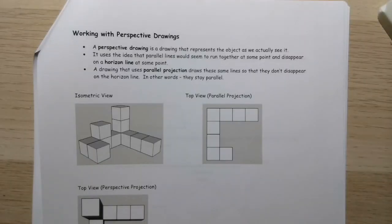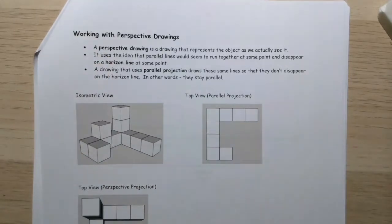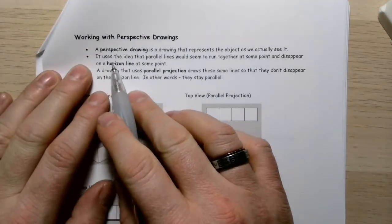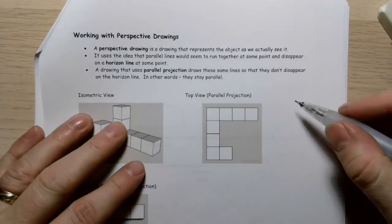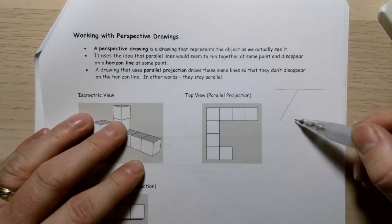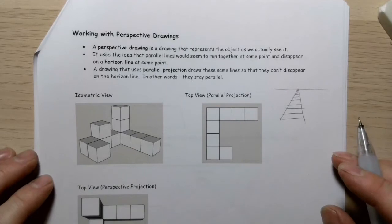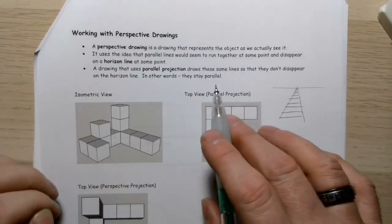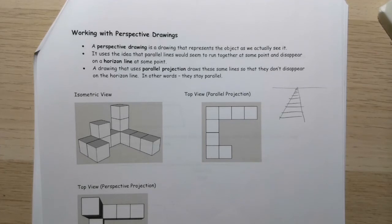Now we're going to wrap up with a quick discussion about perspective drawings. A perspective drawing represents the object as you actually see it. In reality, parallel lines seem to run together and disappear at the horizon — the best example is railroad tracks. As they go off into the distance, they seem to converge at the horizon at a vanishing point. A parallel projection keeps those lines parallel, but that's not necessarily how we actually view things.